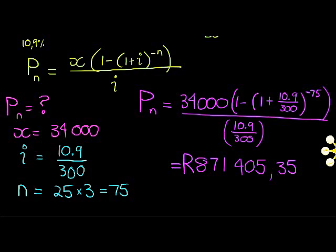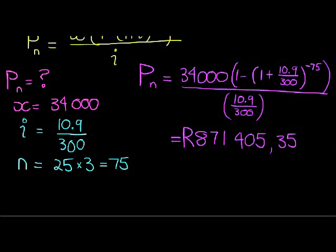This is how much the bank will award him right away if he is willing to pay, or able to pay, $34,000 every four months for 25 years.